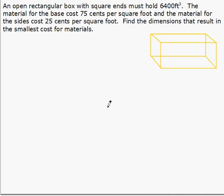The following is an optimization problem where we want to minimize the cost to make a rectangular box. An open rectangular box with square ends must hold 6400 cubic feet. The material for the base costs 75 cents per square foot and the material for the sides costs 25 cents per square foot. Find the dimensions that result in the smallest cost for the material. We want to minimize the cost so that's our primary equation.